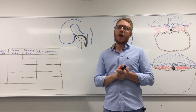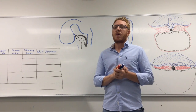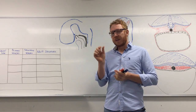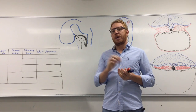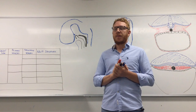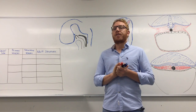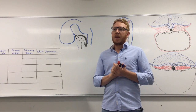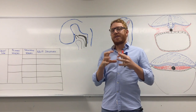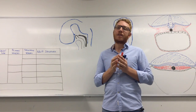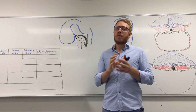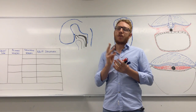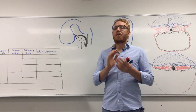Welcome to this short lecture on the embryology of the nervous system. We will look at the general development of the central and briefly the peripheral nervous system. There are three main learning outcomes: first, the formation of the brain vesicles and the folding of the brain; second, how the neural tube forms and creates all the cells of the central nervous system; and third, the positional change of the spinal cord itself.